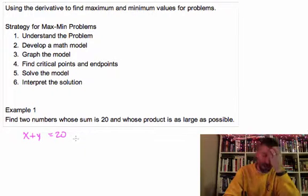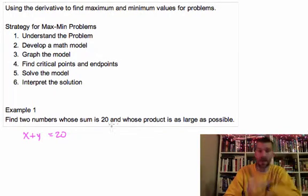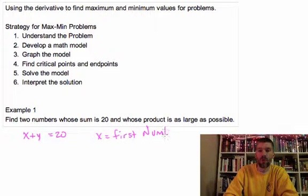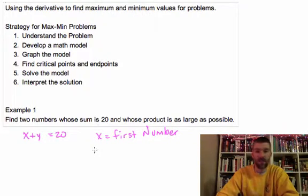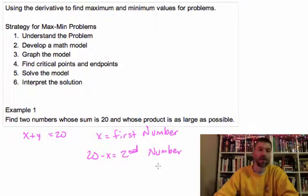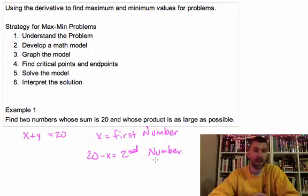So what I'm going to do is I'm going to let x be my first number choice. And remember, I can only go up to 20. So if I pick x to be my first number, then 20 minus x would be my second number. So those are the two things that I'm dealing with.